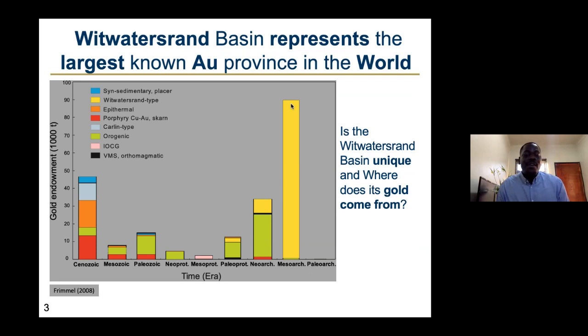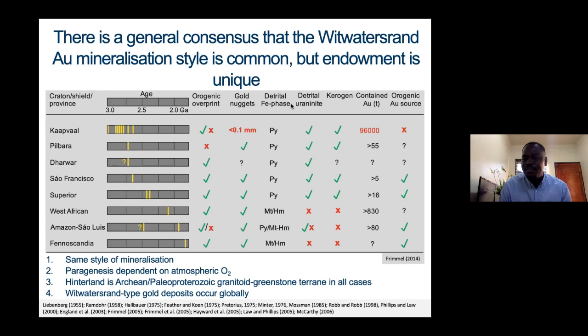To answer this question, I need to bring you to some of the basics that people who have worked in the Wits for over 130 years have managed to come up with. People have looked for similar types of mineralization, because every time you have such a large deposit, everyone wants to own one. For this reason, in each and every country there were a number of exploration campaigns, and a list has been compiled looking at similarities and differences in so-called Wits-type gold deposits or occurrences.